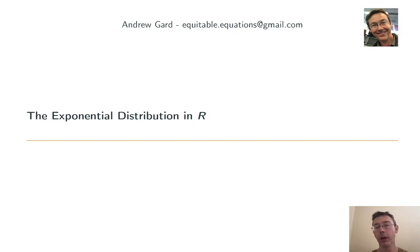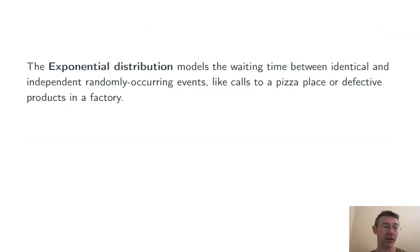Hey everybody. Today we're talking about the exponential distribution in R. This models waiting time between identical, independent, randomly occurring events, like calls to a pizza place or defective products in a factory.